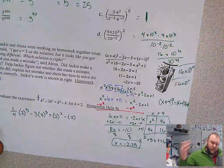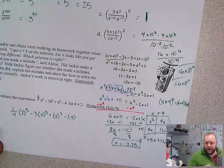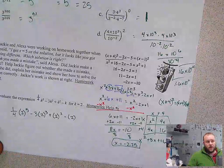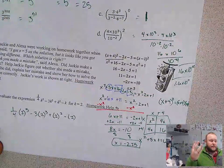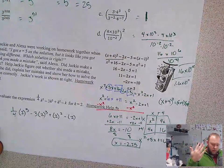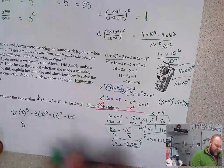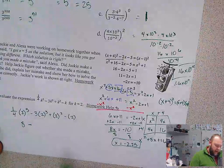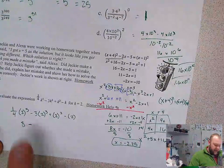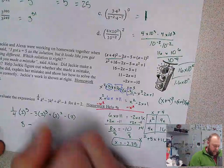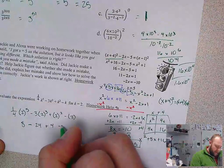PEMDAS. Grouping symbols. Parentheses are a grouping symbol. Nothing inside of that. Next, I'm going to move to exponents. 2 to the 5th power. 2 times 2 is 4 times 2 is 8 times 2 is 32. 32 divided by 4. So 1/4 of 32 is 8 minus 2 to the 3rd. 2 times 2 is 4 times 2 is 8. 8 times 3 is 24. 24 plus 4 minus 2.